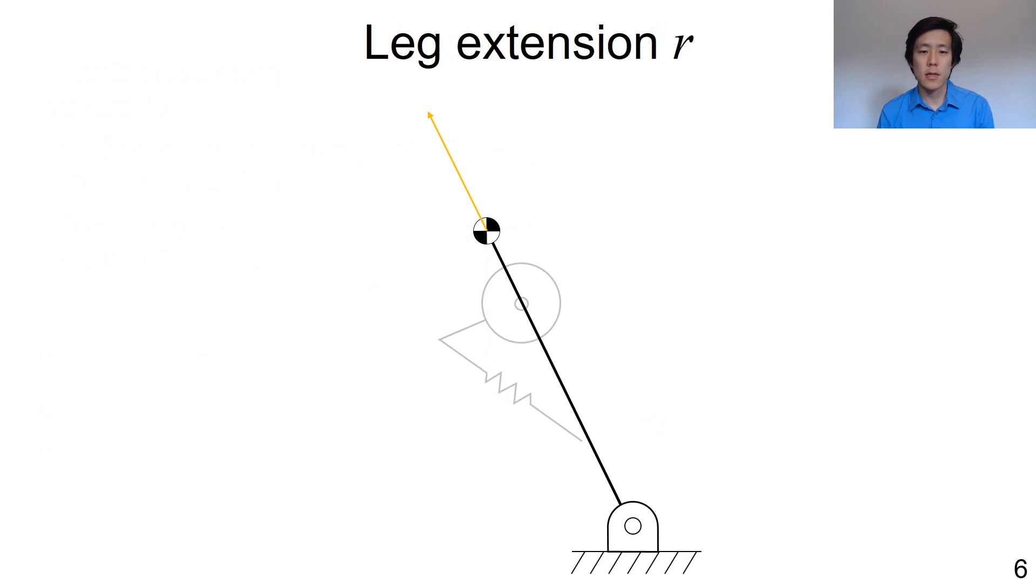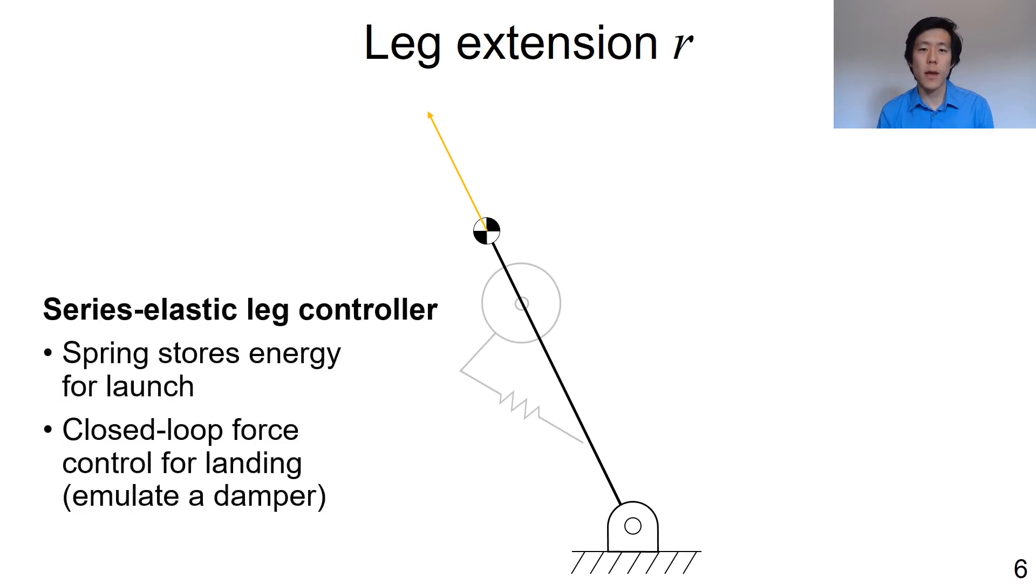The radial motion is controlled by the series elastic actuator, which extends and retracts the leg on the ground. During launch, we use an open-loop energy-based expression that relates the winding of the spring to the takeoff velocity. During landing, we use closed-loop force control over the series elastic actuator to emulate a damper, decelerating the robot and removing energy.